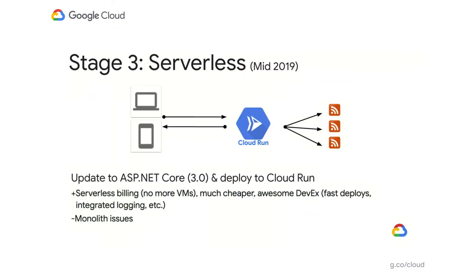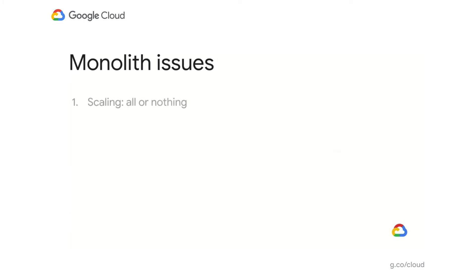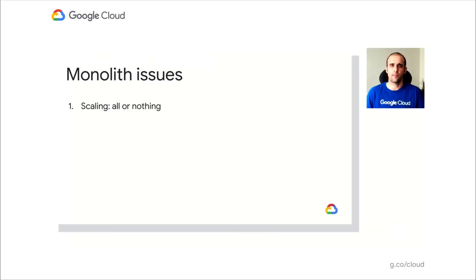At the same time, we were still running as a single monolithic application and we had monolith issues. First, scaling: we could only scale all or nothing. If we had to scale the web front-end because there were more users, we had to scale the reader and the converter as well. This wasn't ideal because we wanted to scale individual services as needed, but we couldn't do that in a monolithic application.